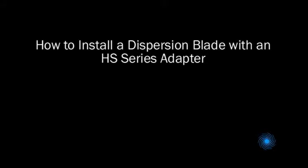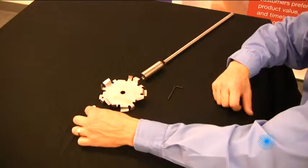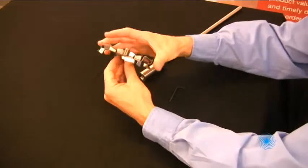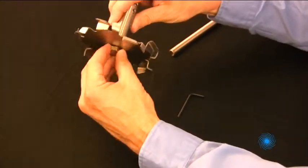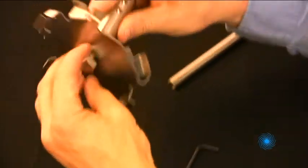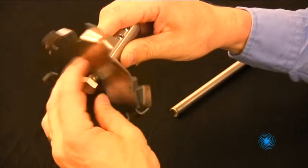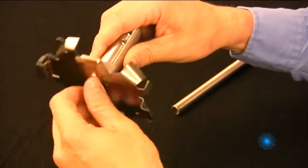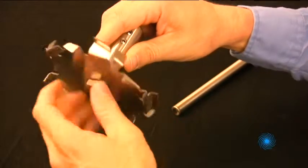Dispersor manufacturers often supply a shaft that is drilled and tapped at the end for bolting on dispersion blades. Our HS series adapter enables you to mount a dispersion blade on standard untapped mixer shafts. Simply bolt the blade to the adapter then assemble it to the shaft and tighten with set screws.